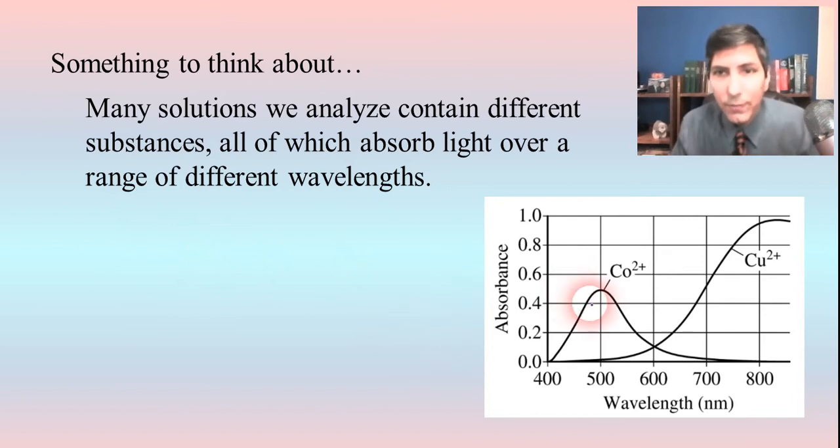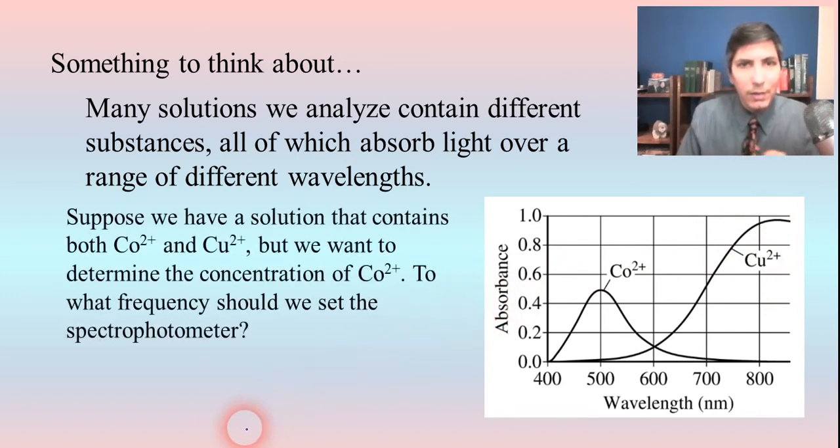Well, as you can see, cobalt has a maximum absorbance somewhere around 500 nanometers, right? On the other hand, copper-2 ions have a maximum absorbance somewhere a little bit over 800 nanometers. So that's going to affect where you set your spectrophotometer. Now, let's say that it's our job to determine the concentration of the cobalt-2 ions. To what frequency would you want to set the spectrophotometer?